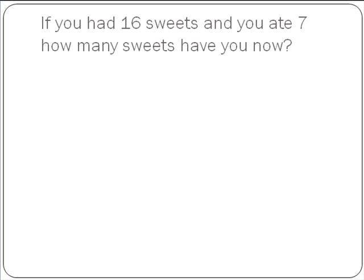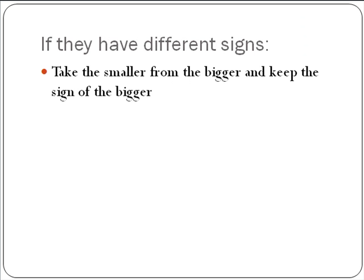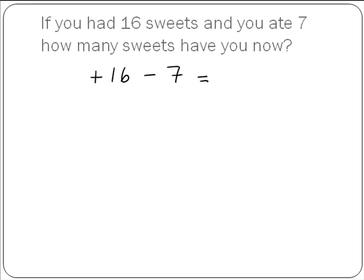Now we look at our next problem. If you had 16 sweets and you ate 7, how many do you have? So again, it's plus 16. If you ate 7, it means minus 7. So this time our signs are different. The rule for different signs is: take the smaller number from the bigger number and keep the sign of the bigger. So we take 7 from 16, which leaves us with 9, and we keep the sign of the bigger which is plus. So we have plus 9 — we're going to have 9 sweets.